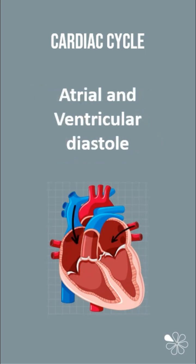Atrial and ventricular diastole is the resting phase and all four chambers are relaxed and filling with blood. Ventricular pressure is low allowing the AV valves to open, which allows blood to flow from the atria into the ventricles. The semi-lunar valves are closed preventing blood from flowing out of the ventricles.